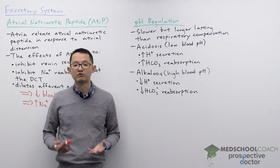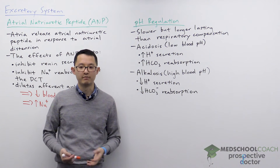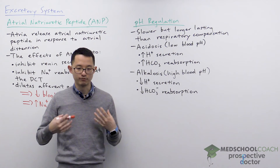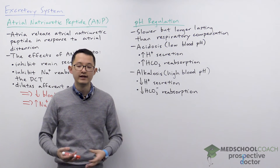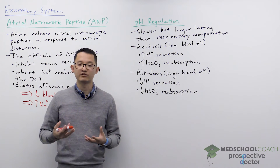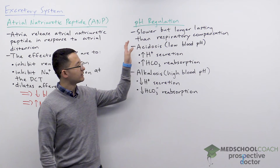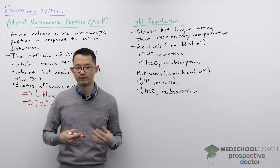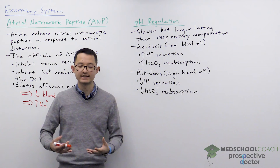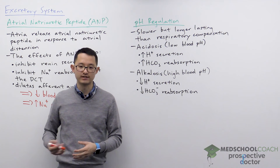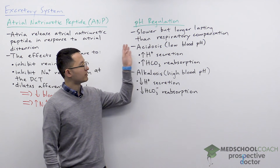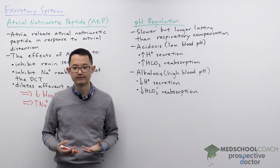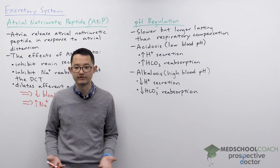We've discussed before respiratory compensation, where the body can either breathe faster to breathe out more CO2 to help increase the blood pH, or you can breathe more slowly — hypoventilate — to release less CO2, helping to decrease the blood pH. The problem with respiratory compensation is you can't just hyperventilate or hypoventilate for long periods of time.